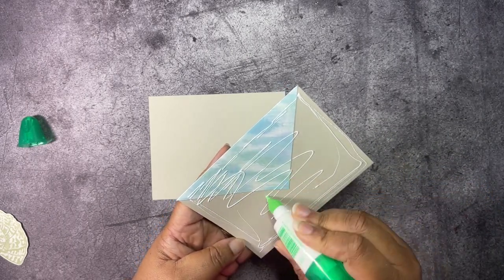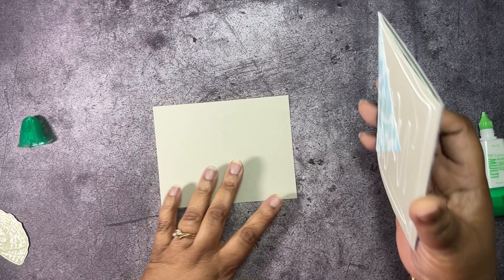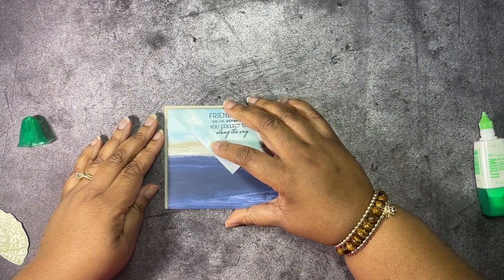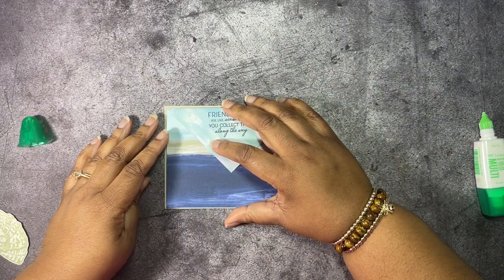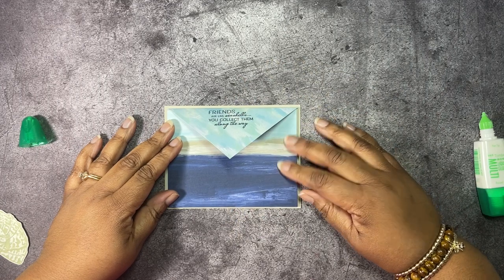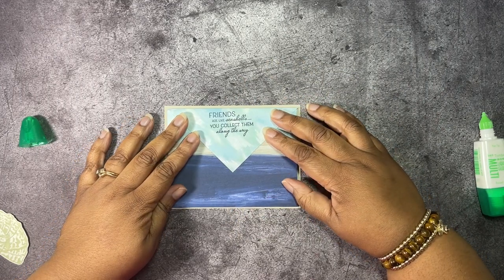Then we're going to glue this entire thing. I'm going to make sure I get plenty of glue on that flap. We don't want it coming up. We're going to glue that to our base here. We're just going to center that card right on there like so.